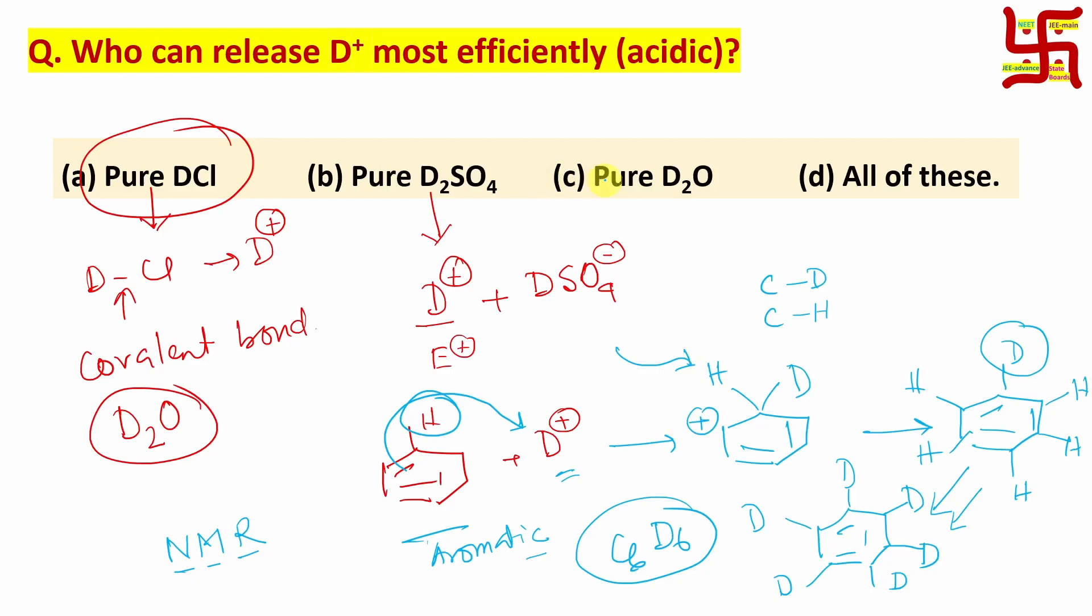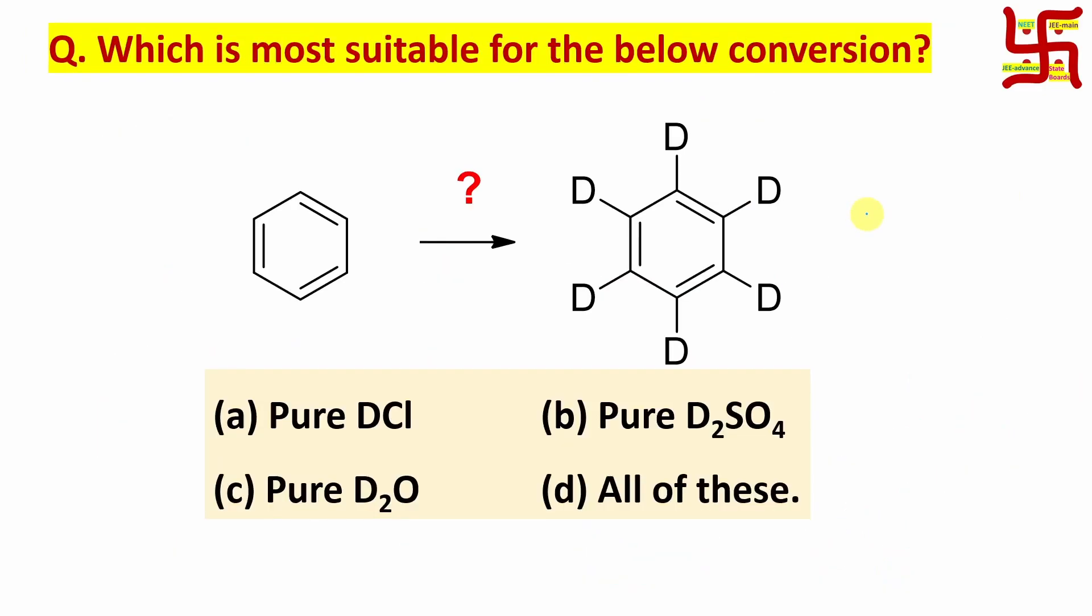Now, pure water. We know water is actually a covalent molecule, not that acidic. At 25 degrees centigrade, the ionic product of water, H+ times OH-, is nearly 10 to the power -14. So very less dissociation happens. That is not enough to carry out this aromatic electrophilic substitution. And obviously, option 4 is not allowed. So what will be the answer?